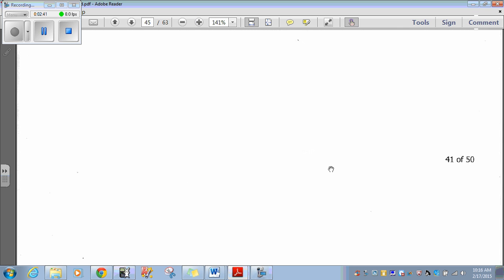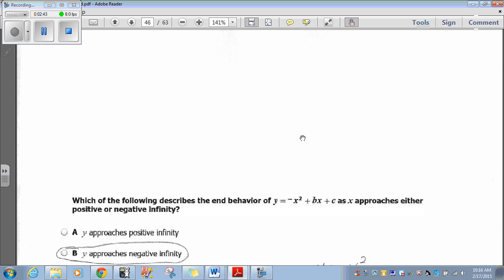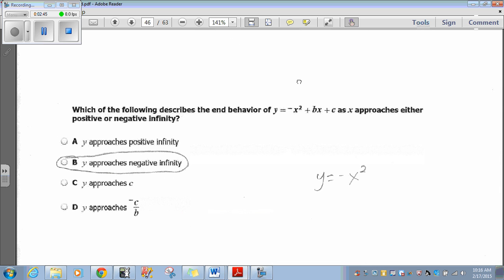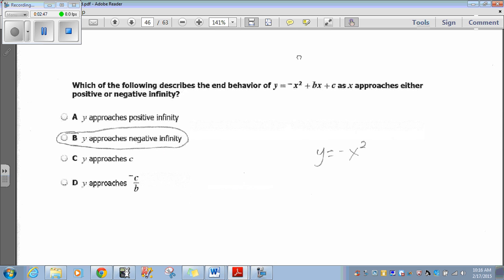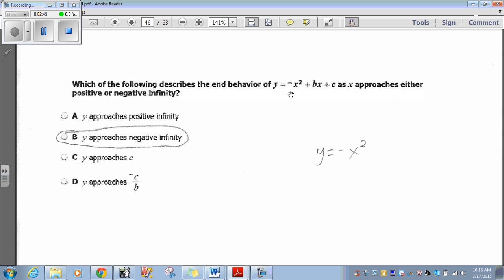Let's move on to 42. Which of the following describes the end behavior of y equals negative x squared plus bx plus c as x approaches either positive or negative infinity?